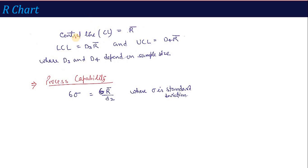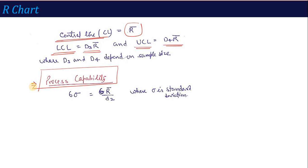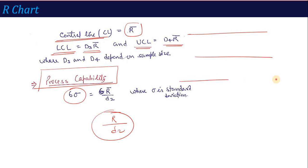For the R-chart: the center line is simply R-bar. The lower control limit is D3 times R-bar, and the upper control limit is D4 times R-bar, where D3 and D4 are constants depending on sample size and will be given in the question. Additionally, process capability is calculated by 6-sigma, where sigma equals R-bar divided by small d2, and d2 is also a constant.